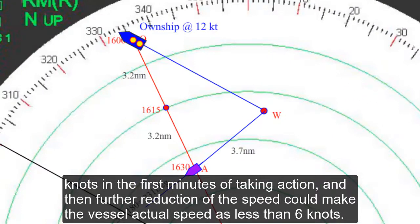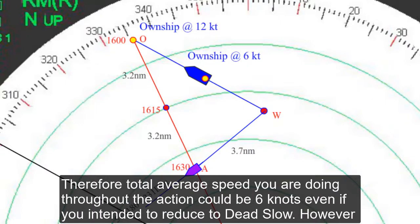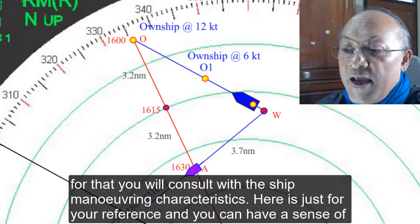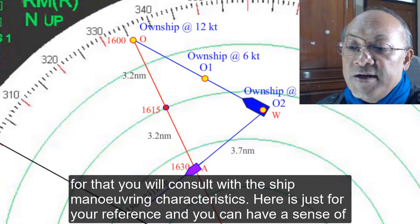And then further reduction of the speed could make the vessel accurate speed as less than 6 knots. Therefore total average speed you are doing throughout the action could be 6 knots even if you intended to reduce to dead slow. However, for that you will consult with the ship maneuvering characteristics.